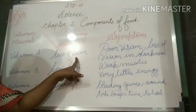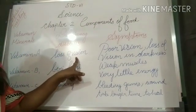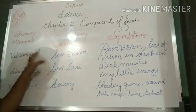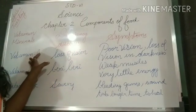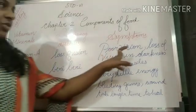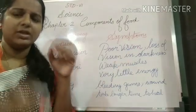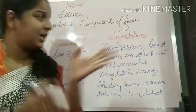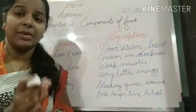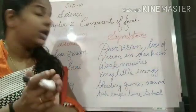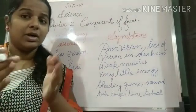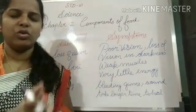Vitamin A deficiency causes loss of vision. Whatever problem is related to the eye is because of lacking Vitamin A. Symptoms include poor vision — the person cannot see clearly.